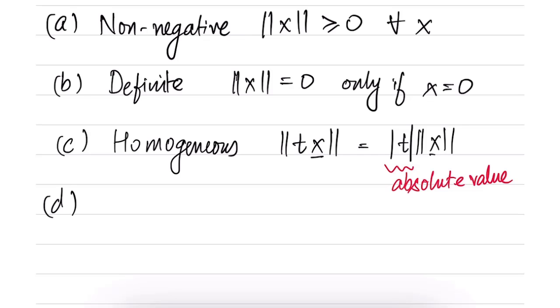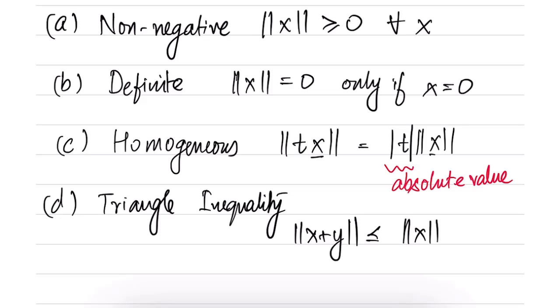Then the last property is the triangle inequality which is saying that ||x + y|| is less than or equal to ||x|| + ||y||. So these are the four properties that any function should define and if these are true then we call that function a valid norm. As I said earlier, it is not necessary that a function satisfying these properties has to arise from an inner product. It is possible that there are norms which do not have any associated inner product.